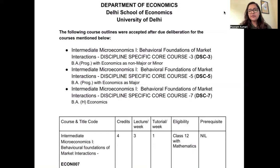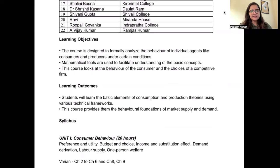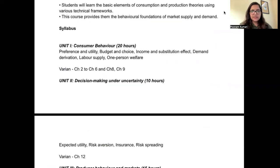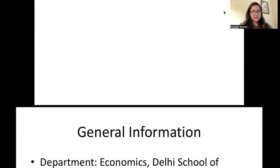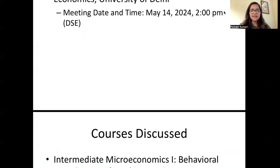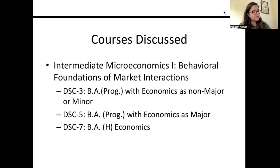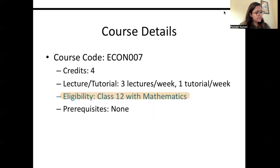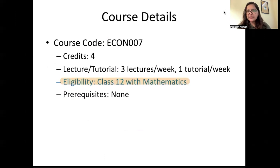For producer theory, the readings have been kept the same. For honor students and for major and minor students, things have changed a bit. All details are on the Delhi School of Economics website, but we've created a summary. The meeting was on 14th of May, so this is the new updated reading list. The course name is 'Intermediate Microeconomics: Behavioral Foundation of Market Interactions', relevant for major, minor, and honor students.